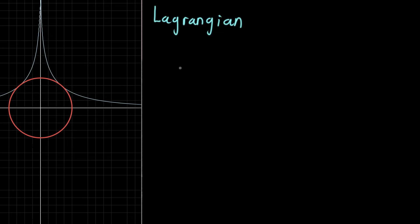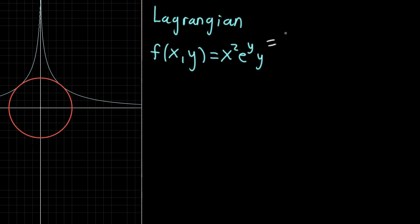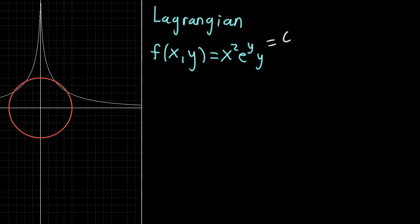To remind you of the setup, this is a constrained optimization problem. We'll have some kind of multivariable function f of x, y — the one pictured here is x squared times e to the y times y. What I have shown here is a contour line for this function: we set it equal to some constant and ask about all values of x and y such that this function outputs that constant. If we choose a different constant, the contour line looks a little different. That's the function, and we're trying to maximize it.